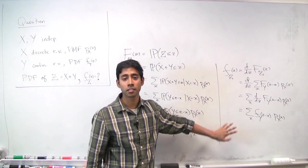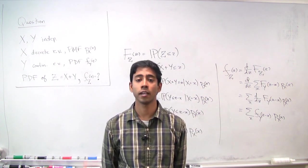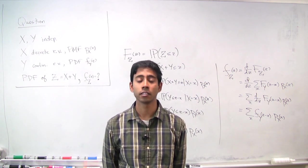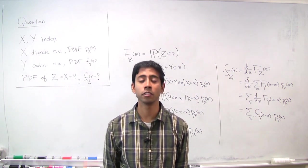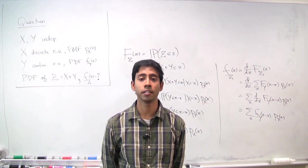So in summary, we've basically computed the PDF of x plus y, where x is discrete and y is continuous. And we've used the standard two-step approach: compute the CDF and then take the derivative to get the PDF.